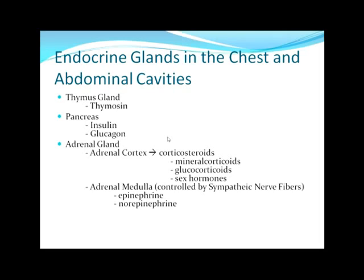Corticosteroids is the general term for the different hormones the adrenal cortex produces. The adrenal medulla produces two hormones: about 95% epinephrine and about 5% norepinephrine, stimulated by the sympathetic nervous system. Epinephrine gets the body ready for fight or flight, causing bronchial dilation, vasodilation, and increasing the amount of glucose readily available for the cells and muscles.